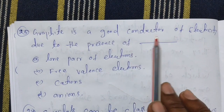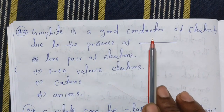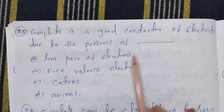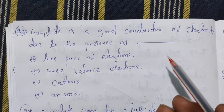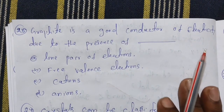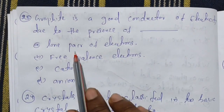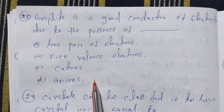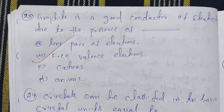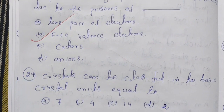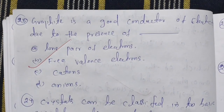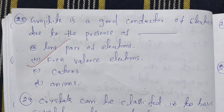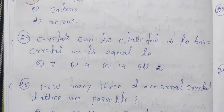Graphite is a good conductor of electricity due to the presence of free valency electrons. The current flow is due to free electrons.